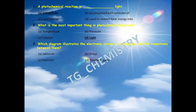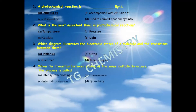Third question: which diagram illustrates the electronic states of a molecule and the transitions between them? This is a very important question regarding the principles of photochemistry, and the correct answer should be option A — the Jablonski diagram.